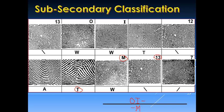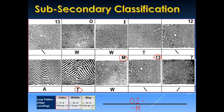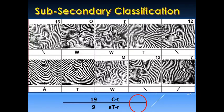Next is a loop pattern with a ridge count of 13. Since this is located on the ring finger, we use the ring finger table — 1 to 13 is inner, so this is inner. This is now our sub-secondary classification. We place the sub-secondary classification on the right side of the secondary division, giving us OI-dash over dash-dash-MI. Take note the numerator and the denominator should be aligned with one another.